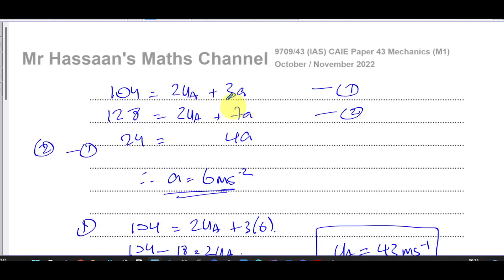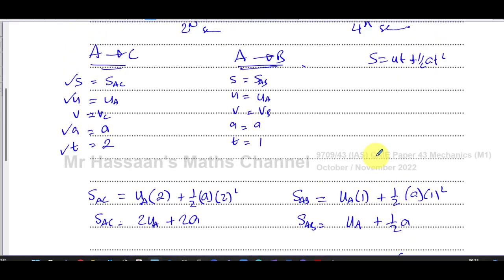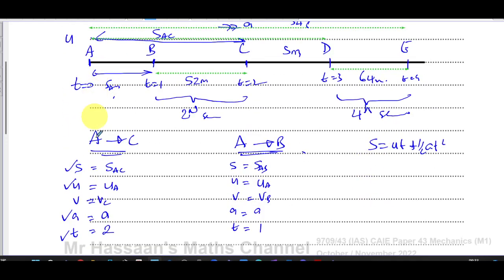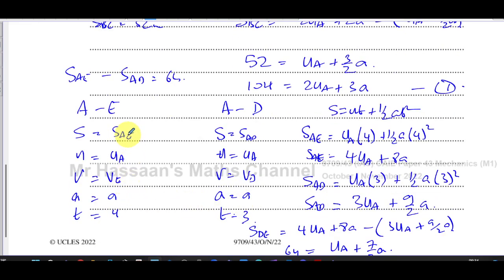So the initial velocity is 43 meters per second and the acceleration is 6 meters per second squared — that's the answer to Part A. It was a tough one, but the key insight is that U in our SUVAT formula must always refer to the same point. By computing AC minus AB and AE minus AD, the U in each case is the same starting point A, the velocities at intermediate points cancel, and we use only S, U, A, and T — which we know.